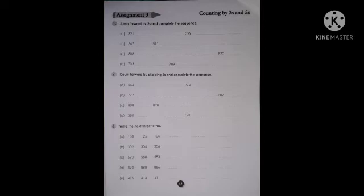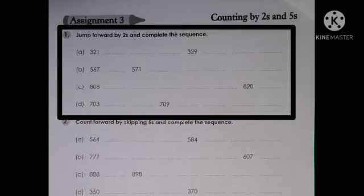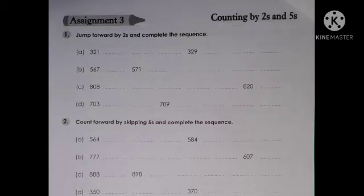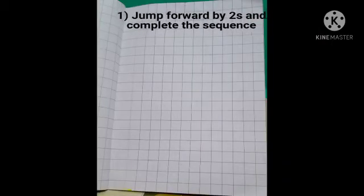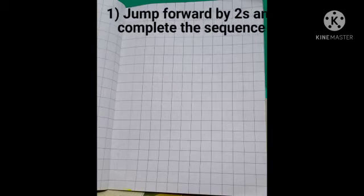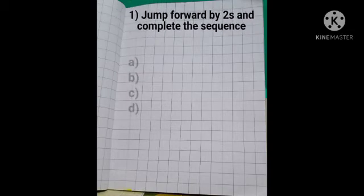First, copy exercise number 1: jump forward by twos and complete the sequence. There are A, B, C and D — four parts. Copy all the questions. The answers are blanks — you have to fill those up yourself. For the two-step forward counting, copy the questions and then write your own answers in the blanks, labelling A, B, C and D clearly.